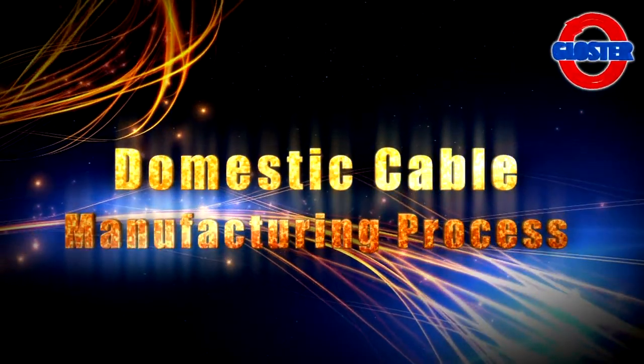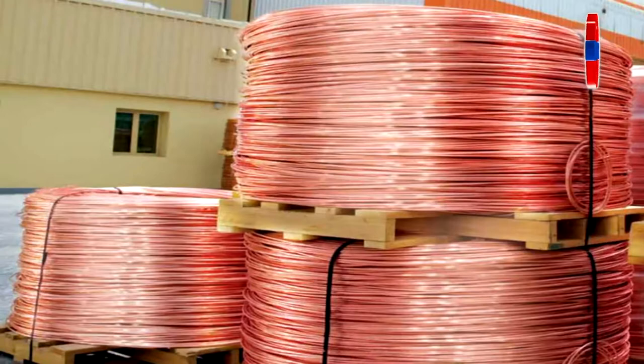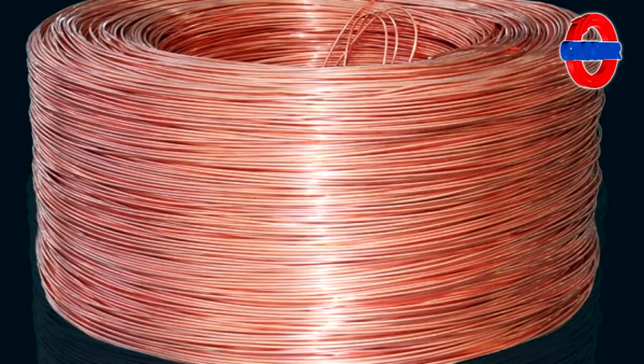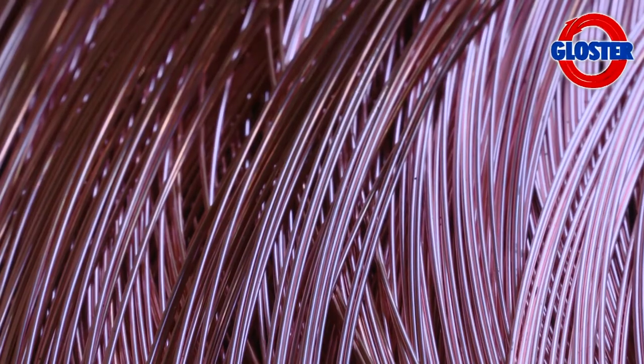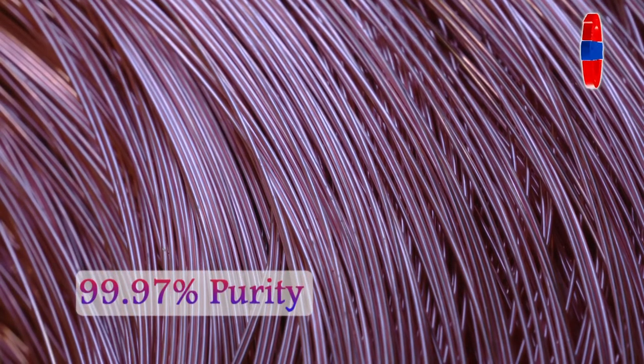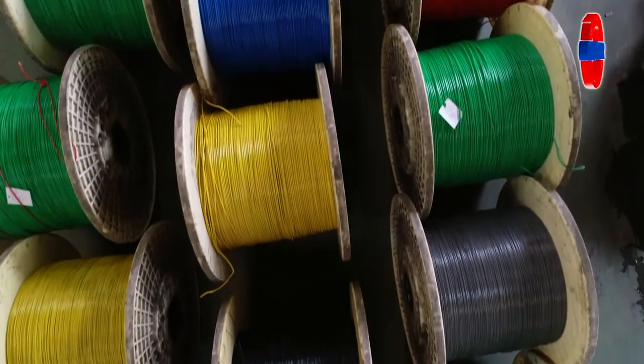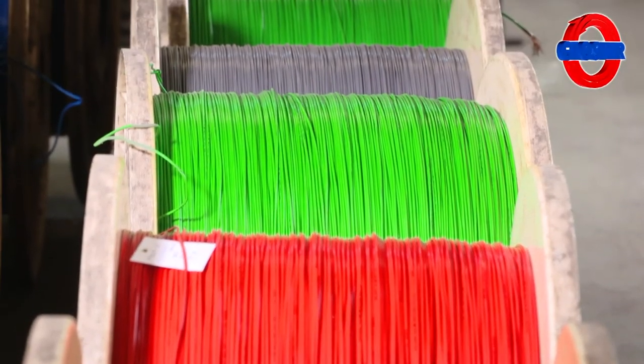Domestic cable manufacturing process. The whole process of manufacturing domestic cables begins with ensuring purity of the most important raw material, copper. Gloucester sources copper raw material from the best in the industry. Gloucester also imports copper with more than 99.97 percent purity. Let's have a look at the copper wire conductor which is used for flexible and domestic cables.